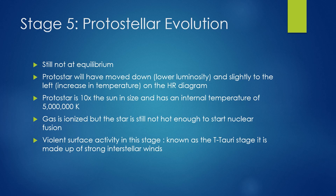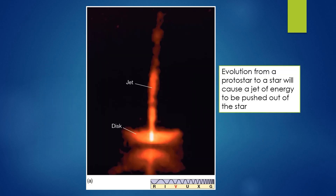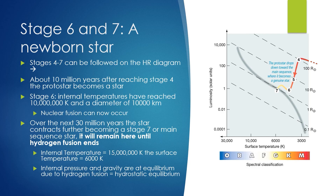At this stage the protostar is about 10 times the size of the sun with an internal temperature of 5,000 Kelvin. The gas in the nebula is now completely ionized, but still not hot enough to begin nuclear fusion. The protostar will have violent surface activity and strong protostellar winds, known as the T Tauri phase — T Tauri was the first protostar to be observed, so that's why this stage is named for it, which essentially means strong interstellar winds. Evolution from a protostar to a star will cause a jet of energy to be pushed out of the star as it forms.